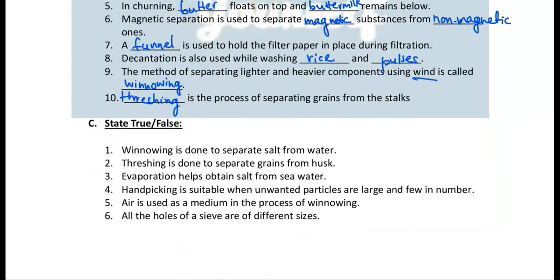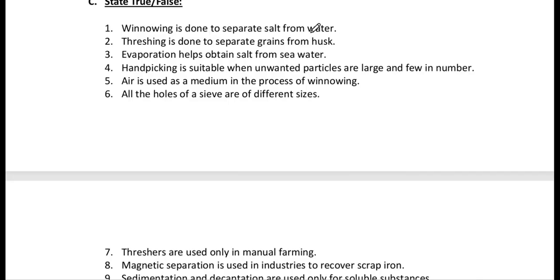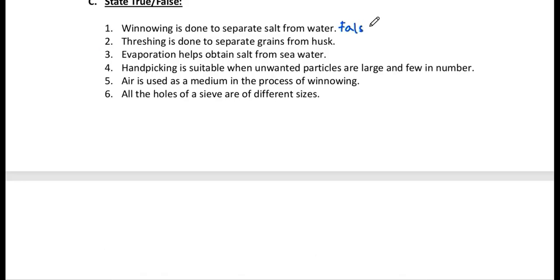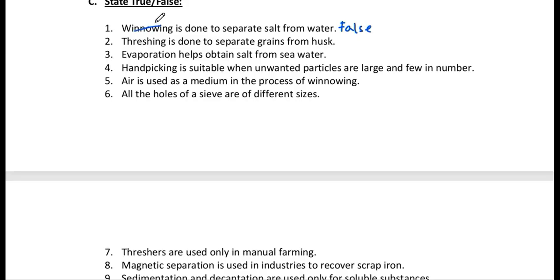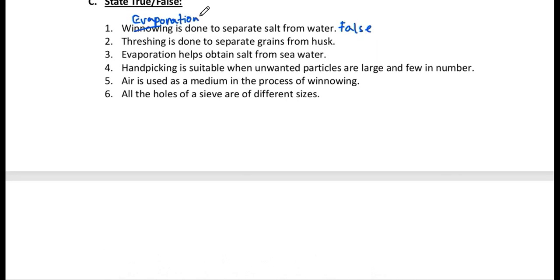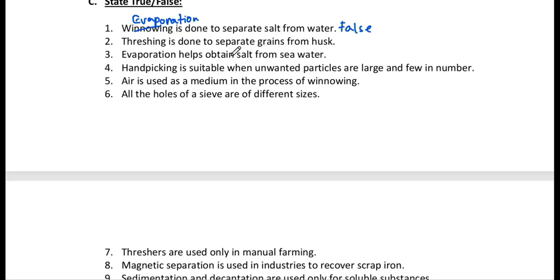Now for true and false. Number 1: Winnowing is done to separate salt from water — this is false. To separate salt from water we use evaporation. Number 2: Threshing is done to separate grain from husk — this is also false. Threshing is done to separate grains from the stalk, not from husk.